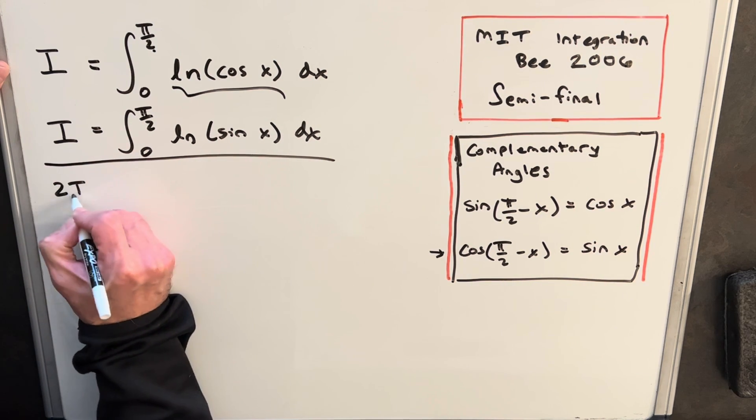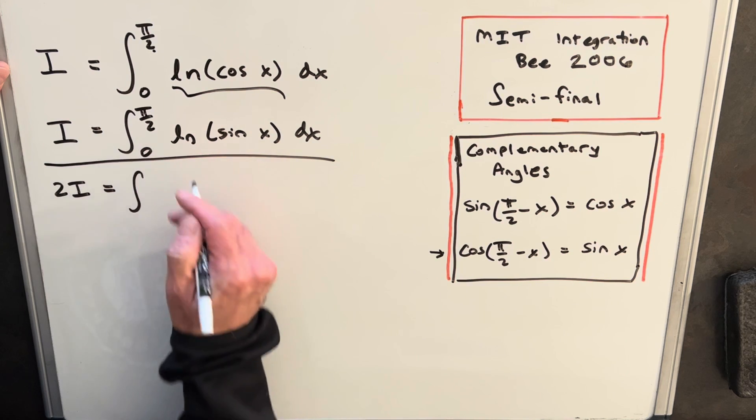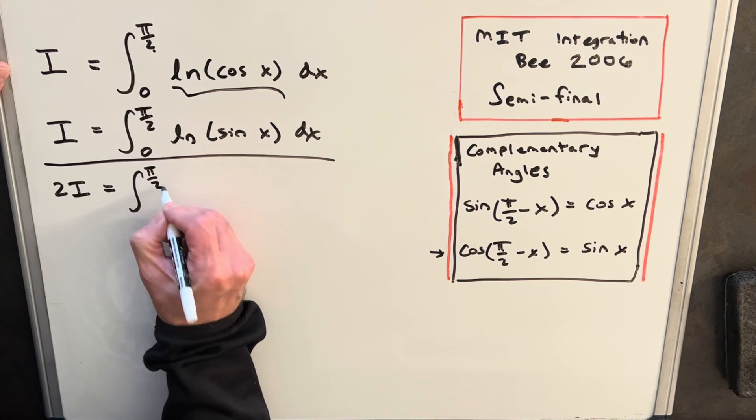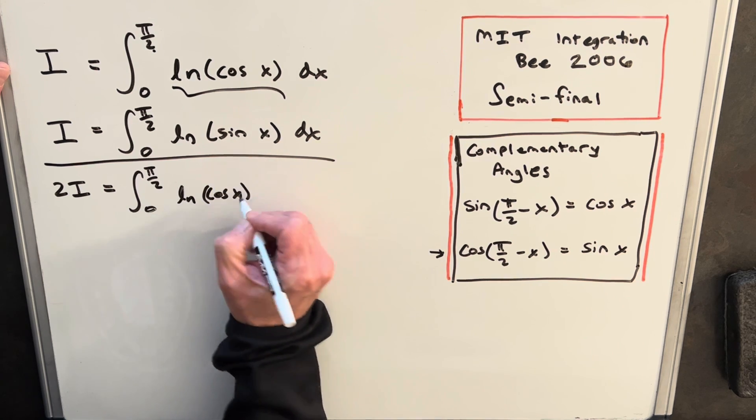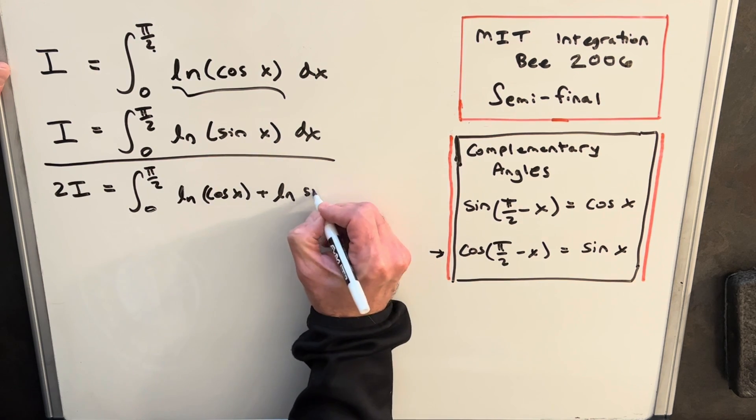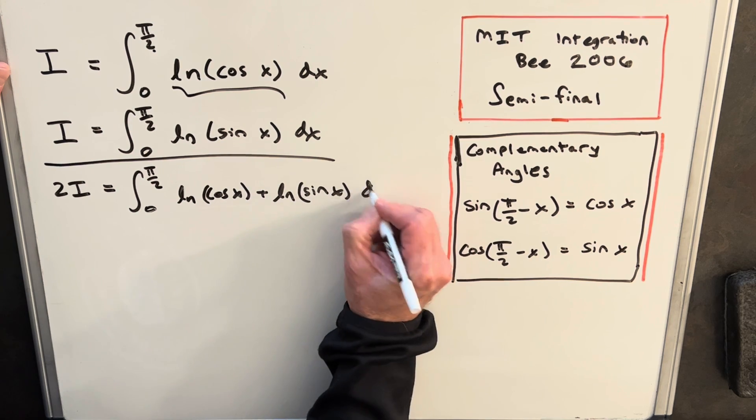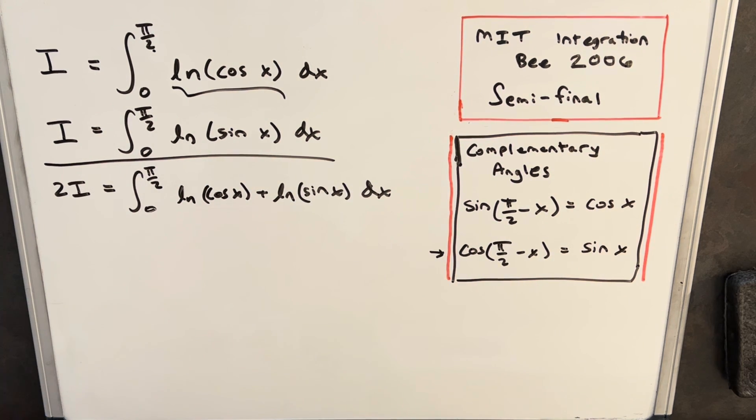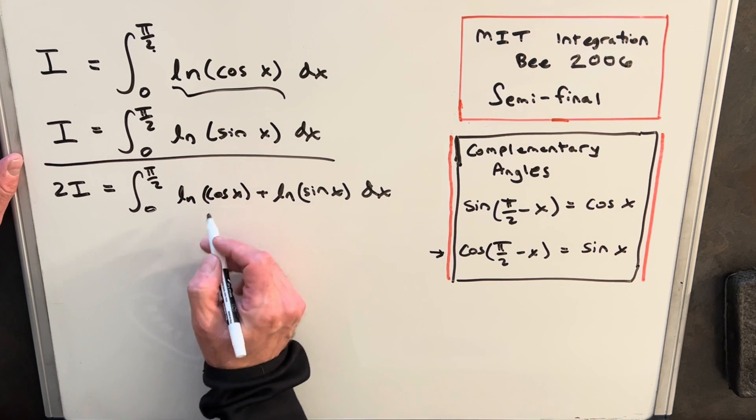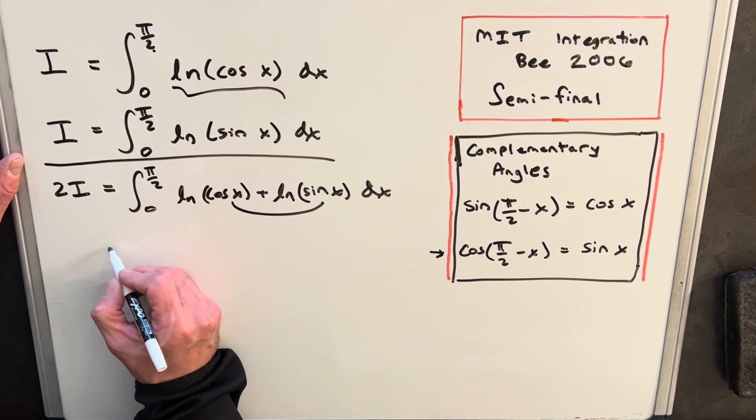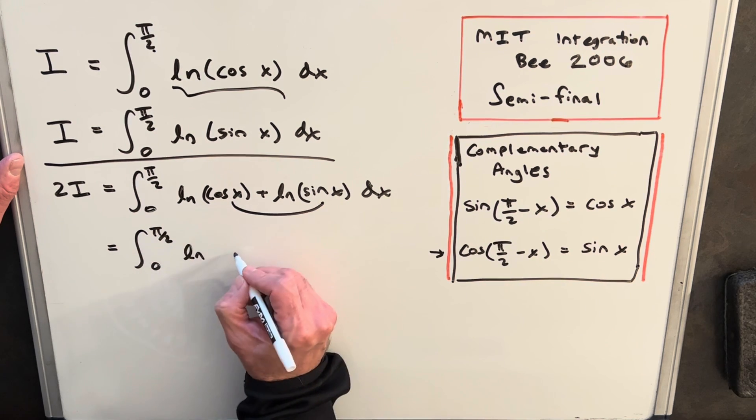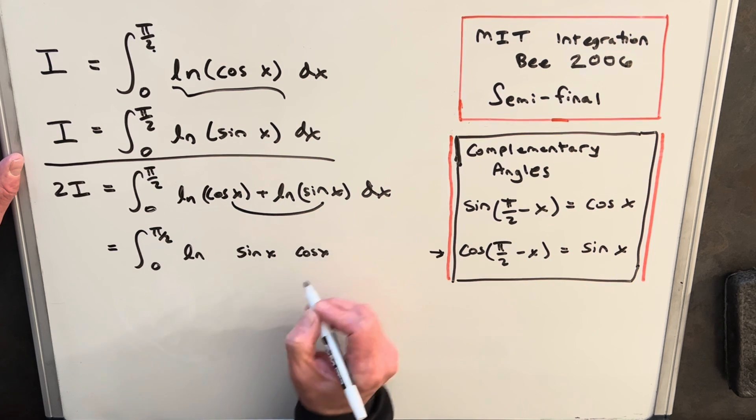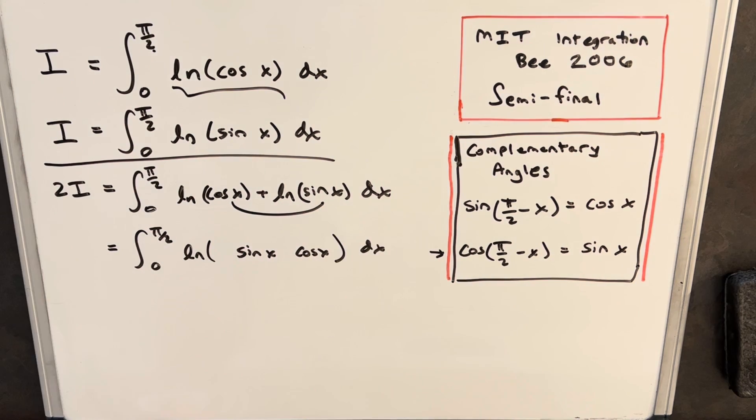And then we'll have 2I. We have the same limits, so we're going to write this all in one integral. So we'll have ln cos x plus ln sine x dx. By adding these two together, we can use our log properties and multiply what's inside. So we'll rewrite this as pi over 2 to 0, natural log of sine x cos x dx.